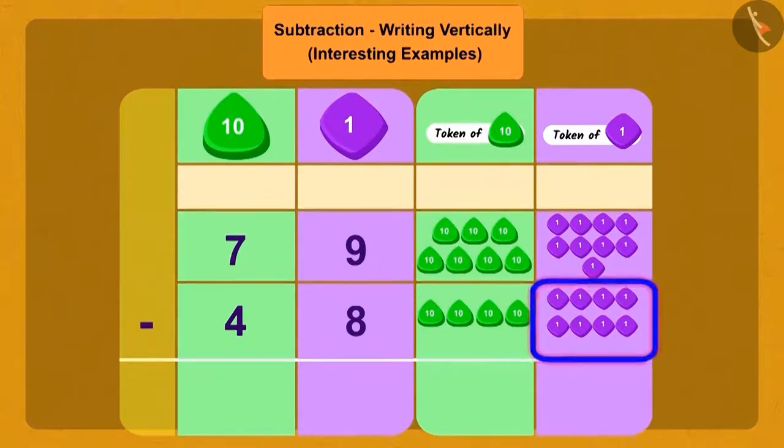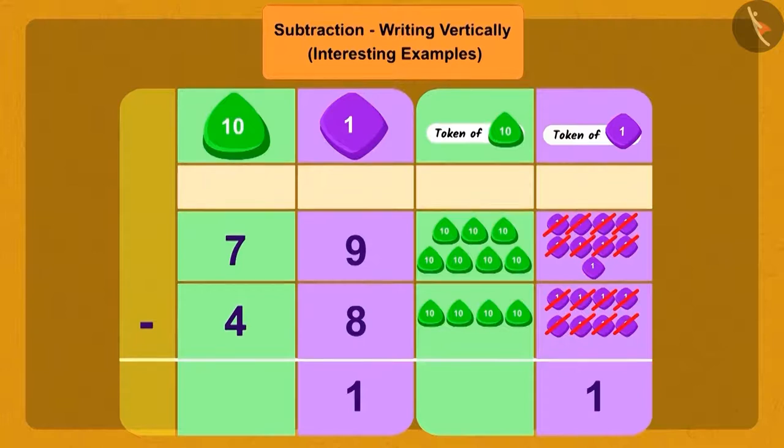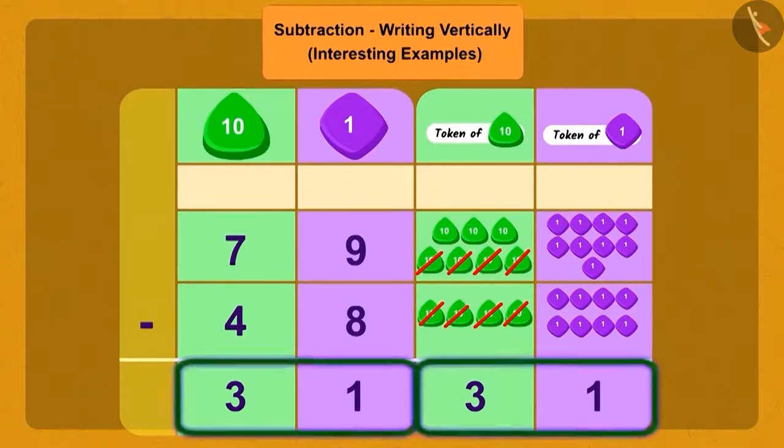Now, if we remove 8 ones from 9 ones, then how many ones are left? 1 one. Now, if we subtract 4 tens from 7 tens, then 3 tens are left. So, how many pearls are left with the bird now? Yes! Now, 31 pearls are left with the bird.